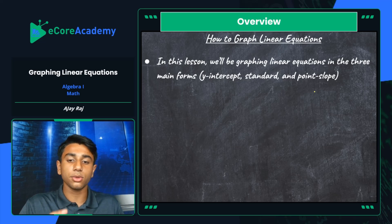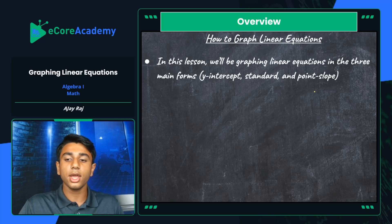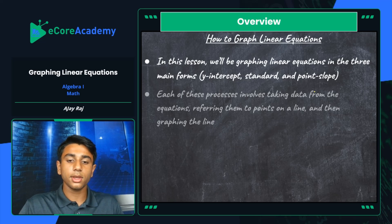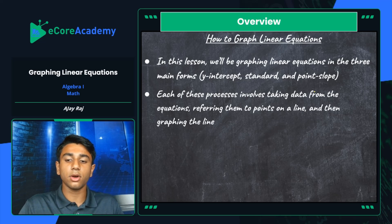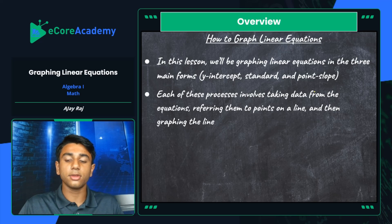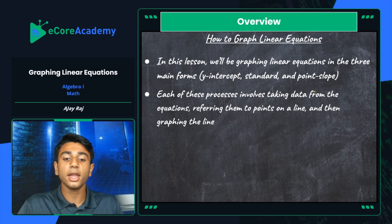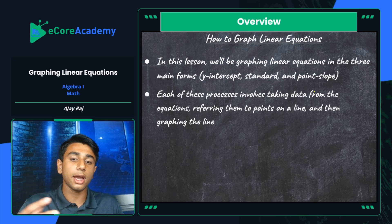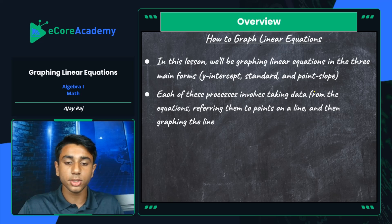In this lesson we'll be graphing linear equations in the three main forms. These three main forms include slope-intercept form, standard form, and point-slope form. Each of these processes involves taking data from the equations and referring them to points that exist on the line, and then after you have a certain amount of points, you will graph the line.